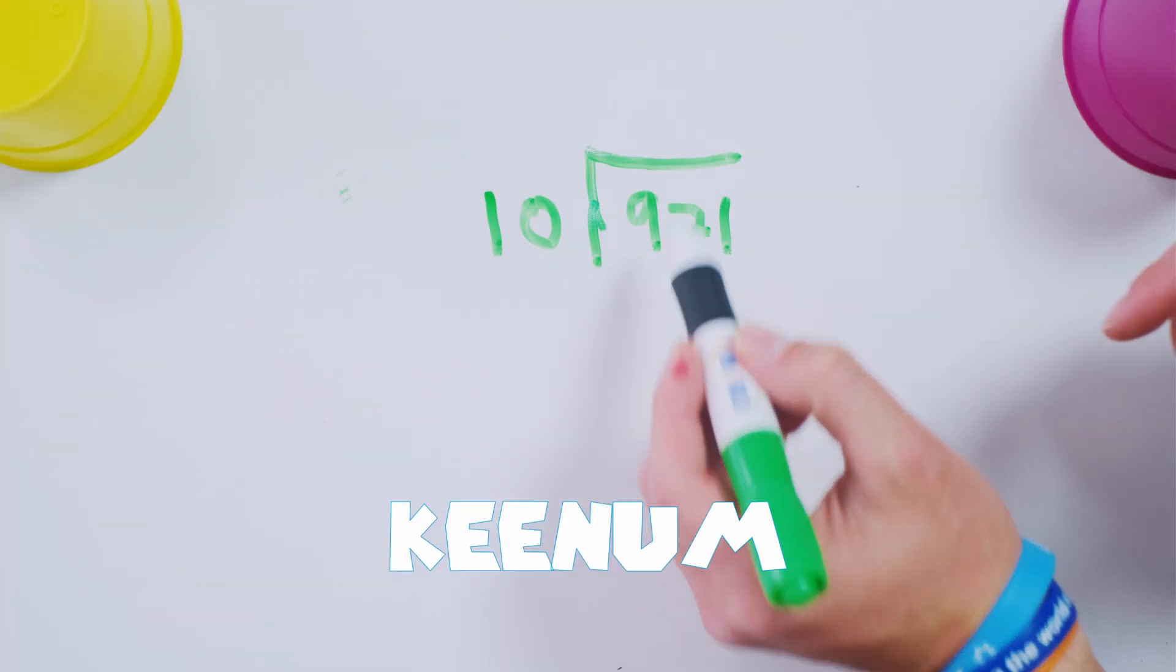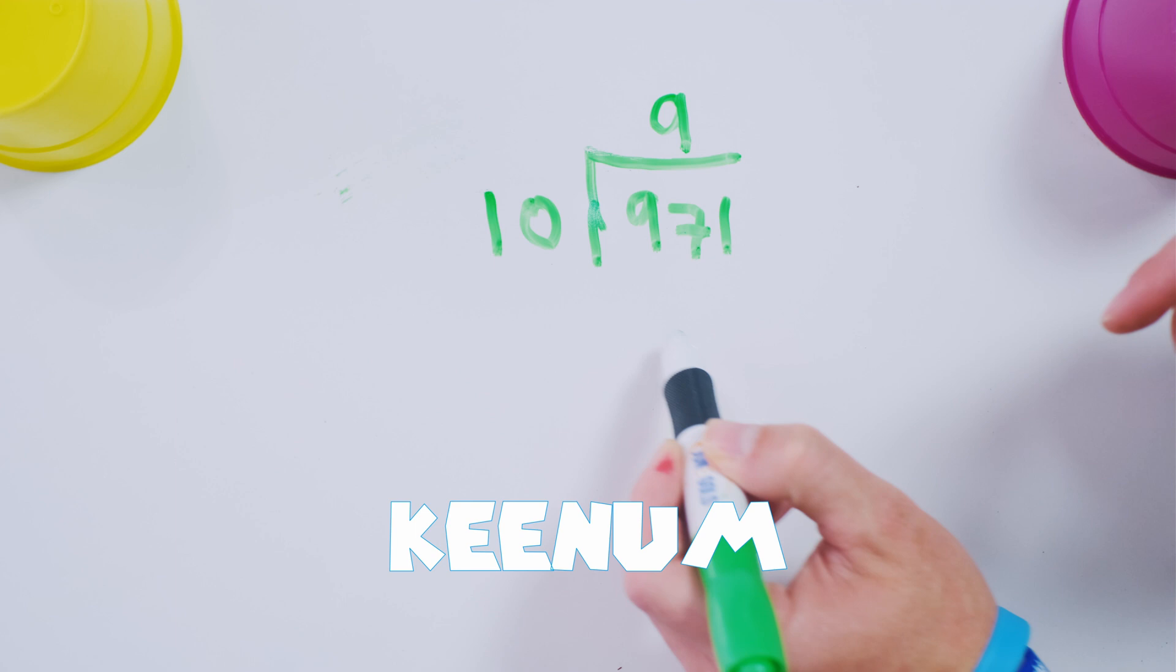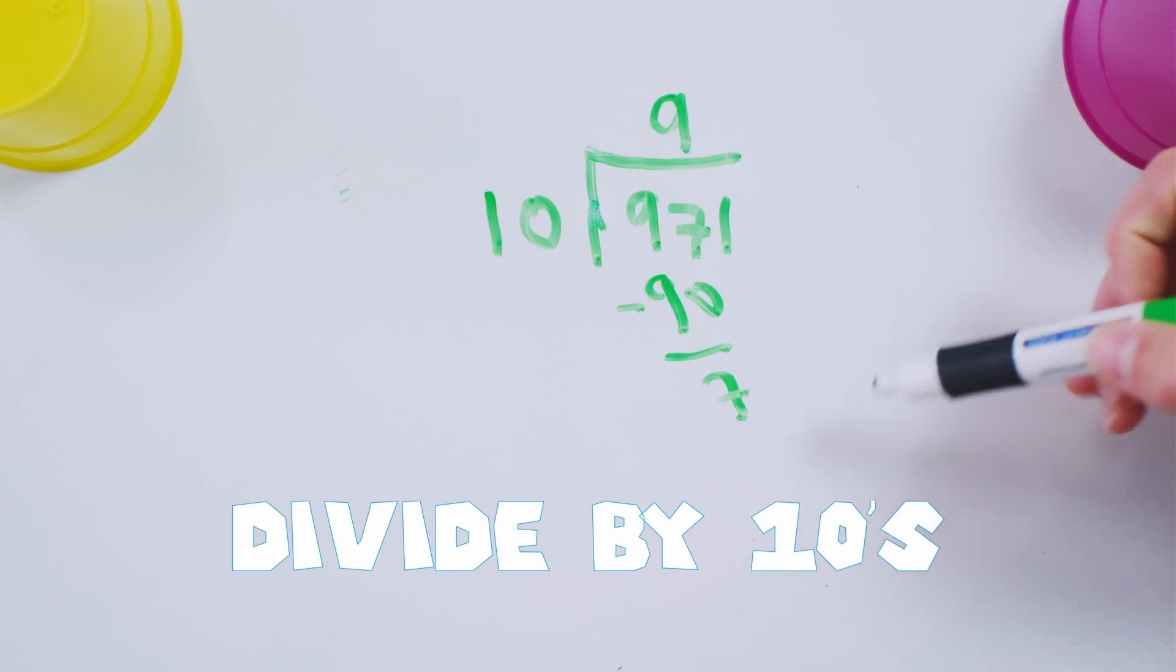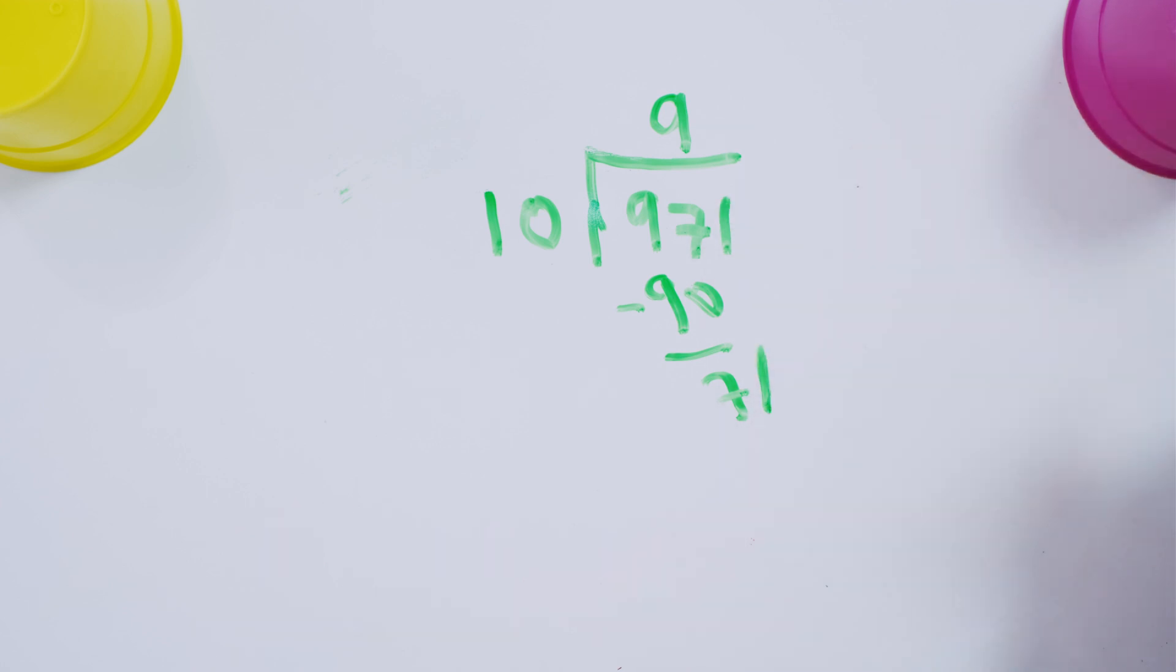Ten goes into 97 how many times? Nine times. So you're going to have a difference of what's really 70 because you have this remainder of one.